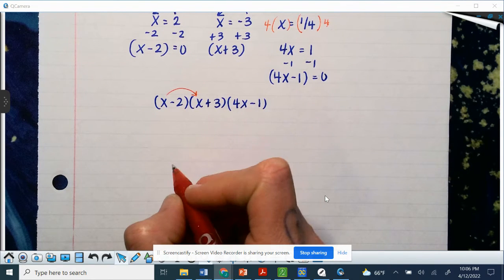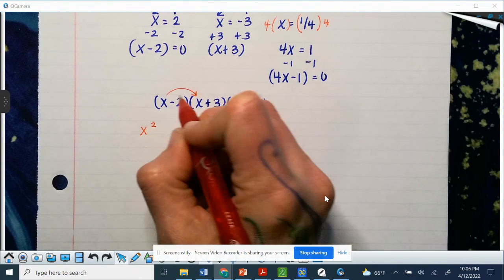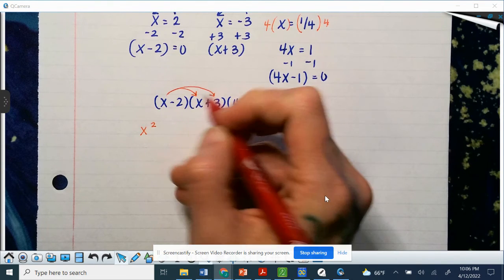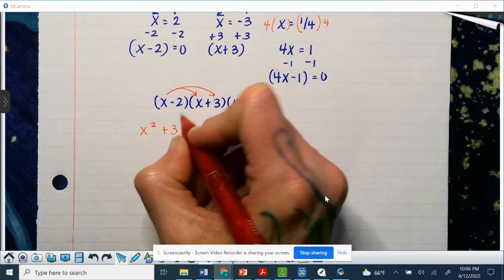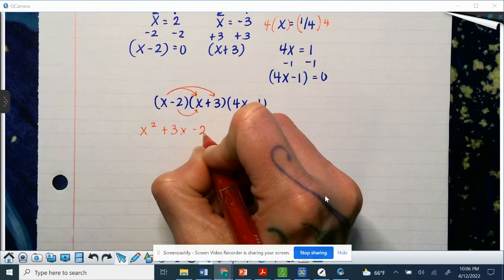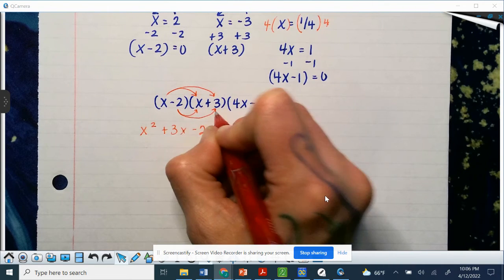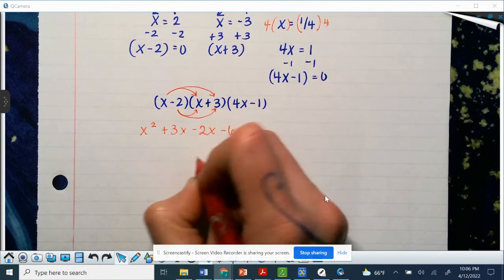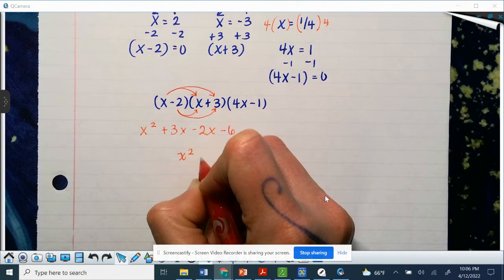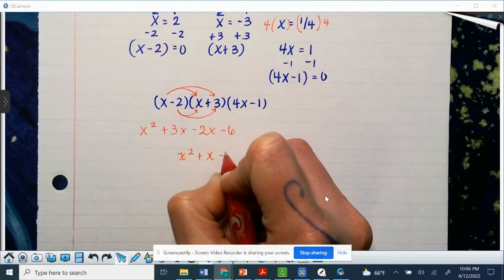So first, first is going to give me x squared. Outer, outer is going to give me 3x. Inner, inner is negative 2x. Last, last is going to be a negative 6.